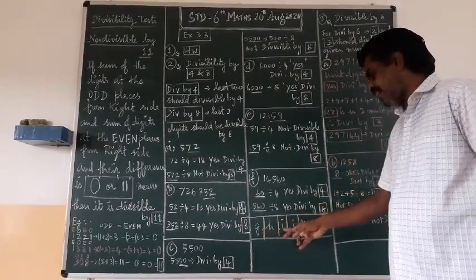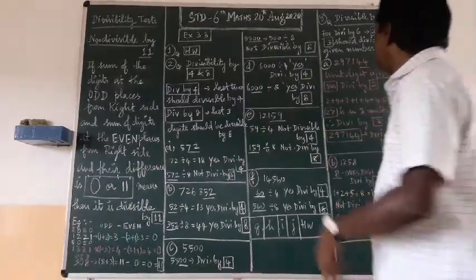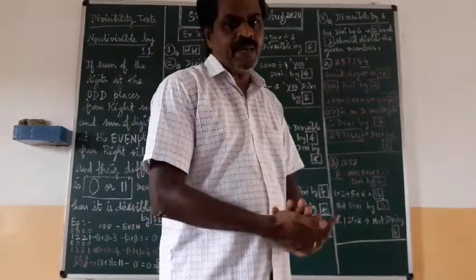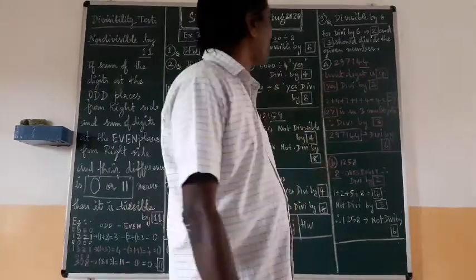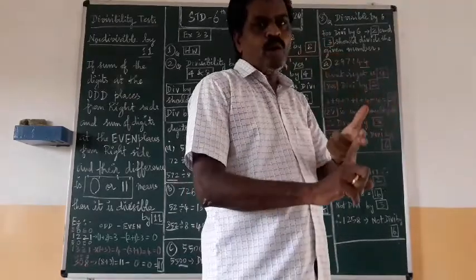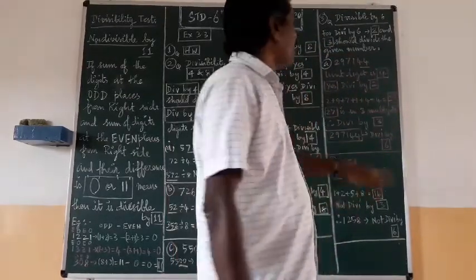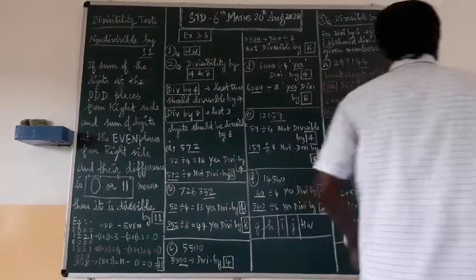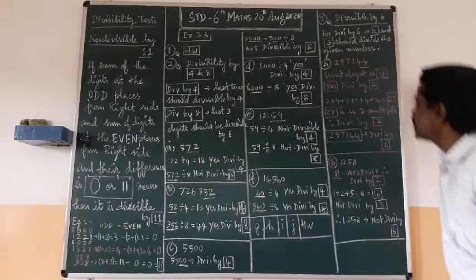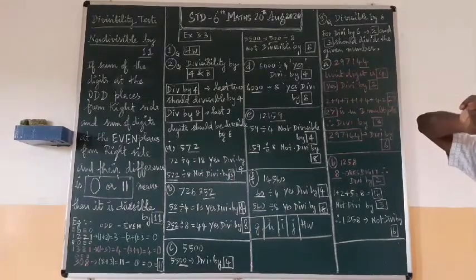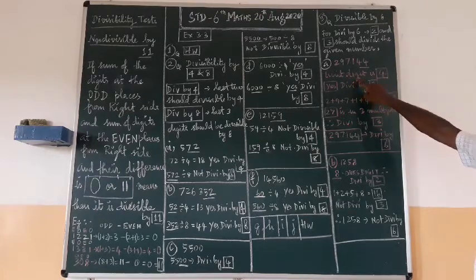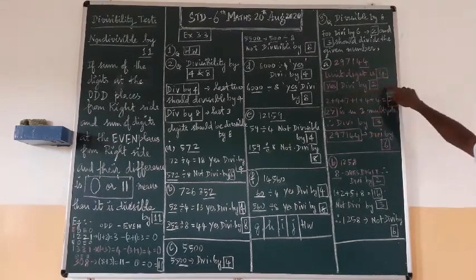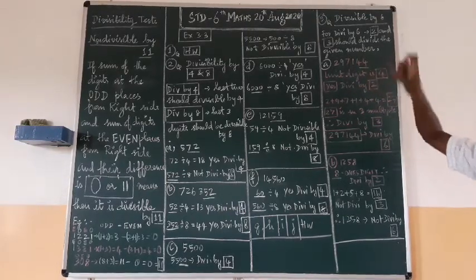Now the third question: divisibility by six. Check whether the given numbers are divisible by six. The condition for divisibility by six: the number must be divisible by both two and three. First example: 297144. Condition for two: the units digit must end in an even number — 4 is even, so yes, this number is divisible by two.